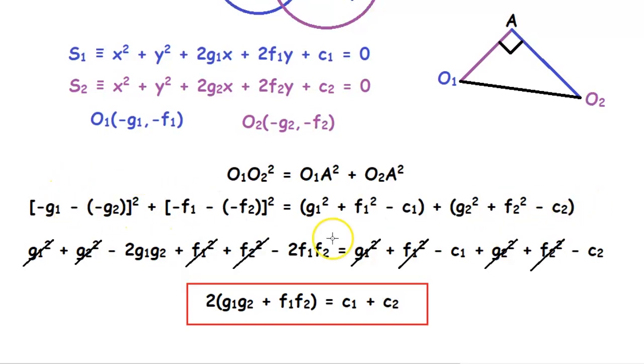When we open these brackets, g₁², g₂², f₁², and f₂² will cancel off. Finally we get our equation: 2(g₁g₂ + f₁f₂) = c₁ + c₂. This is the equation for two circles which intersect orthogonally.